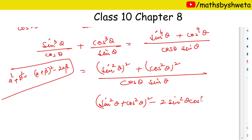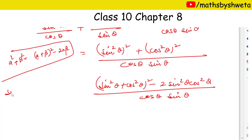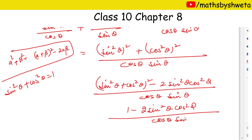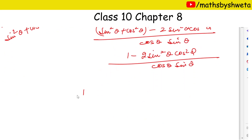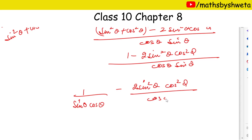So we have sin²θ plus cos²θ whole square, minus 2 times sin²θ cos²θ, and here we have cosθ sinθ. Now you know that sin²θ plus cos²θ equals 1. So upon simplification, with cosθ sinθ in the denominator, we write sinθ cosθ, and further terms cancel out.